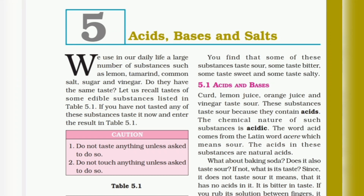Welcome back to our YouTube channel. In this video we are going to study topic 5.1: Acids and Bases. Lemon juice, orange juice, and vinegar taste sour. These substances taste sour because they contain acids. The chemical nature of such substances is acidic. The word 'acid' comes from the Latin word 'acidus,' which means sour.